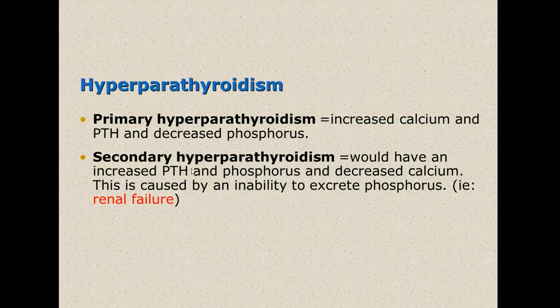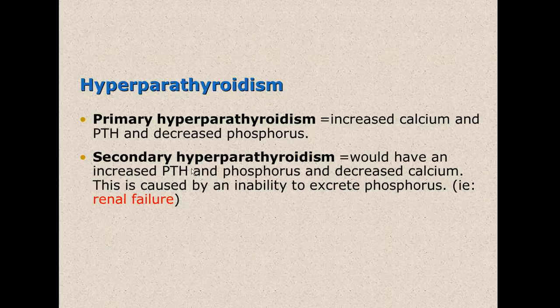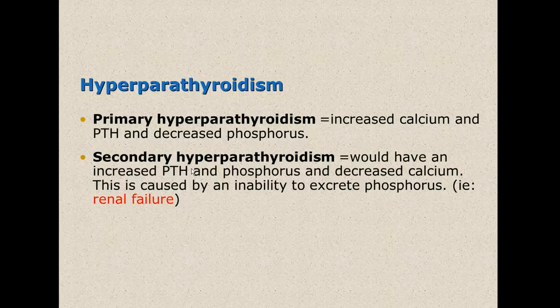One issue we can have with the parathyroid gland is hyperparathyroidism — an overly functioning parathyroid. In primary hyperparathyroidism, we would see increased calcium and parathyroid hormone with a decreased phosphorus. In secondary hyperparathyroidism, we would have an increased parathyroid hormone and a decreased calcium. Secondary hyperparathyroidism is usually caused by an inability to excrete phosphorus in somebody with renal failure.